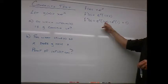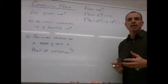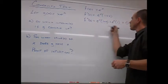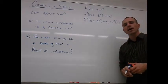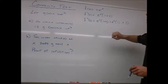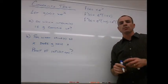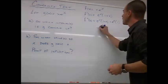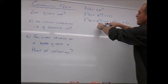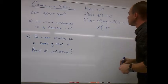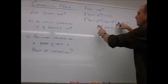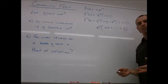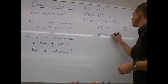Since we have polynomials and e^x — which is always continuous — the second derivative always exists, so we only need to solve for it equaling zero. We factor out e^x from both terms: e^x[(1 + x) + 1], which simplifies to e^x(x + 2). That's our simplified second derivative. Since e^x never equals zero, we only need (x + 2) = 0.